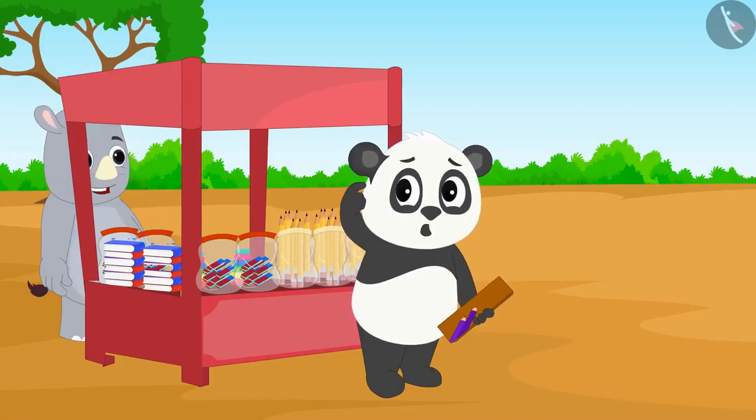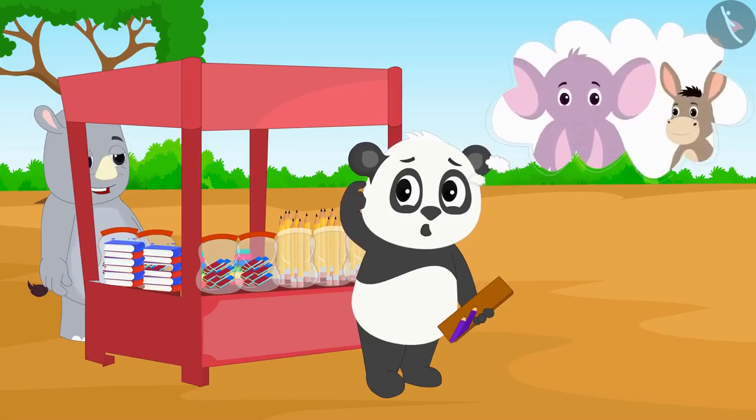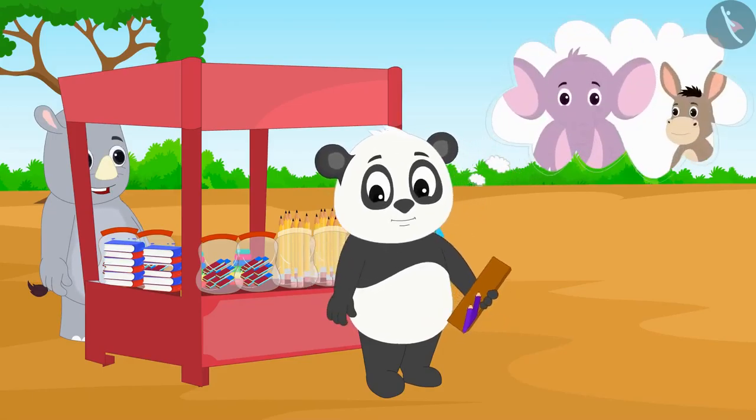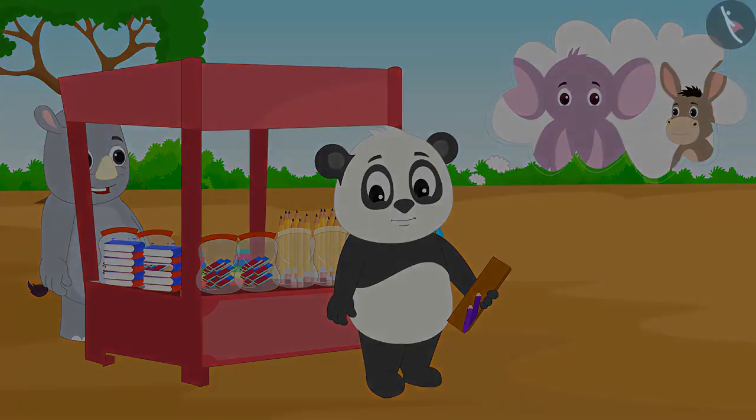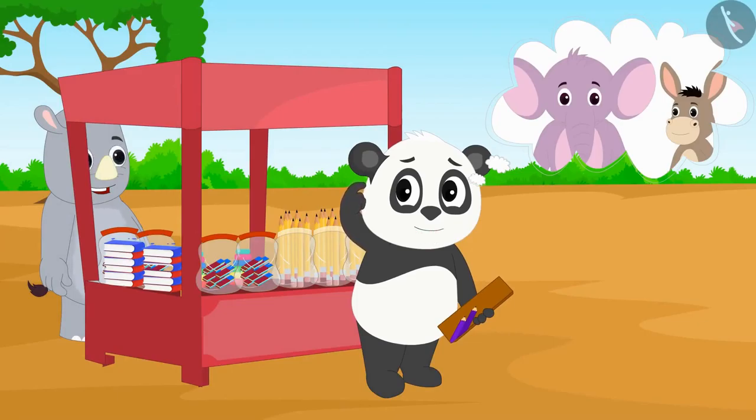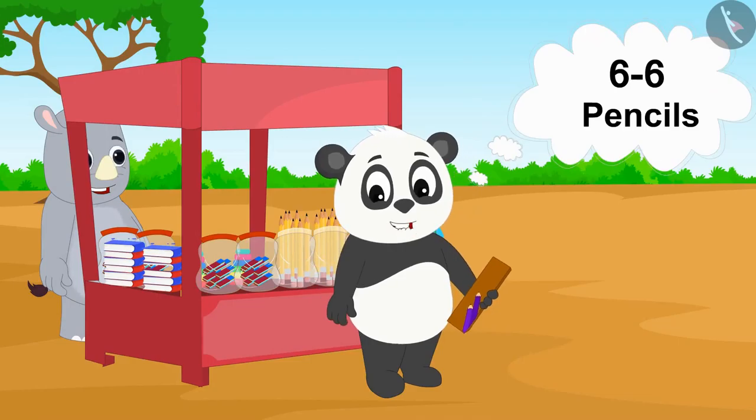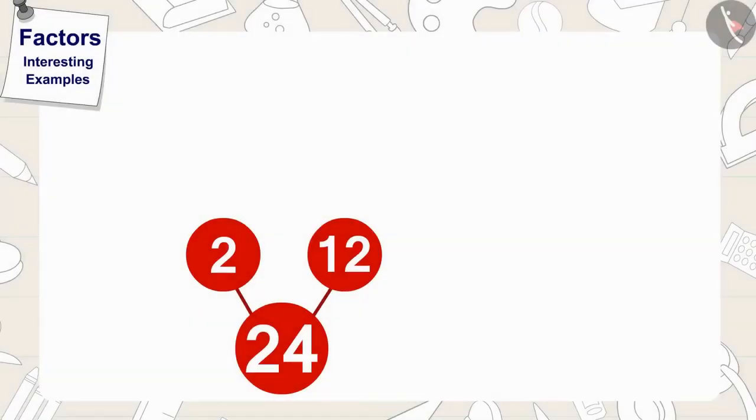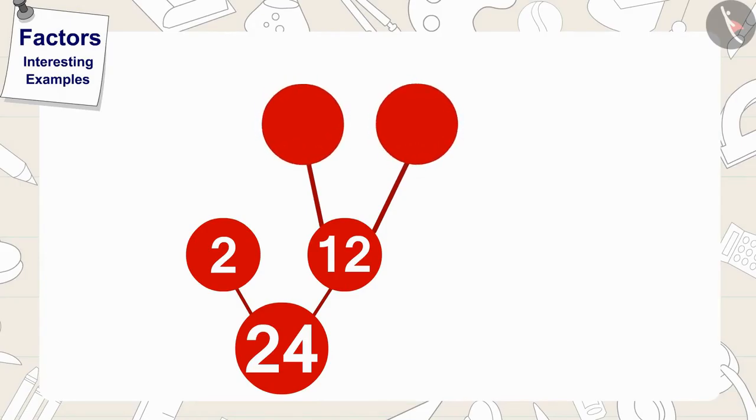Now, Golu is wondering if his two friends will also be able to divide their 12 pencils to more friends. My friends can divide their 12 pencils equally by giving 6 pencils to each of their two friends. Thinking this, Golu made two lines from 12 and made two circles at the other end. Golu wrote 2 in this circle and 6 in this circle.